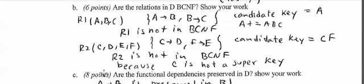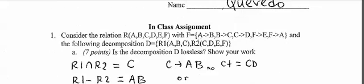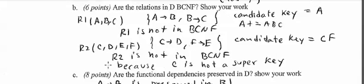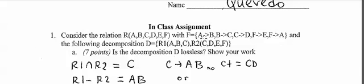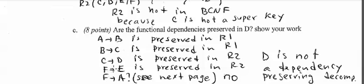So R1 is in 2NF and R2 is in 1NF — neither is in BCNF. Now we check dependency preservation. A→B is preserved in R1, B→C is preserved in R1, C→D is preserved in R2, F→E is preserved in R2, but we don't know about F→A. We need to apply the dependency-preservation algorithm to check whether F→A is preserved.